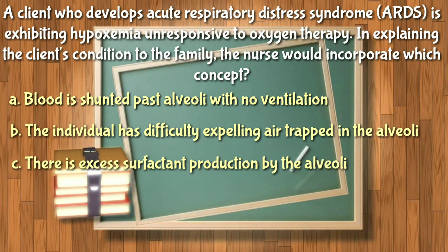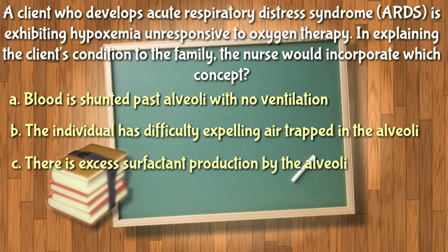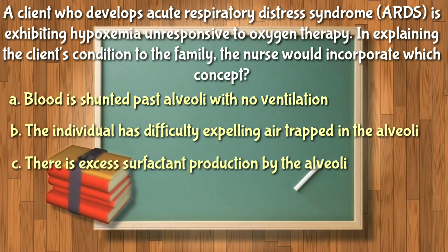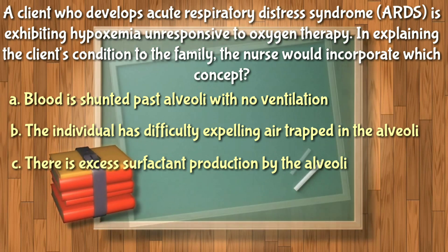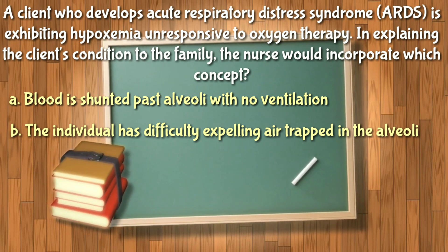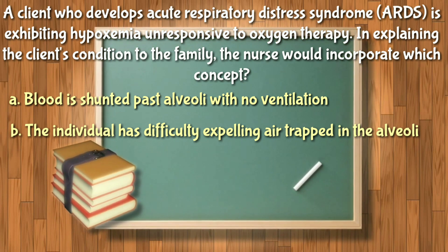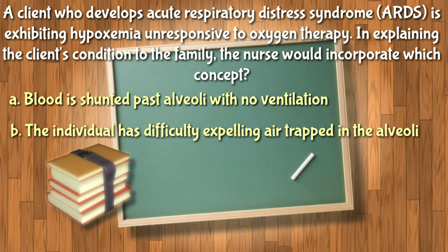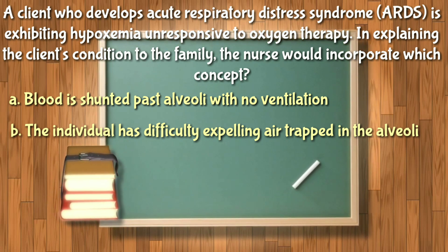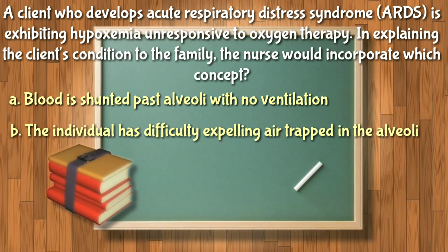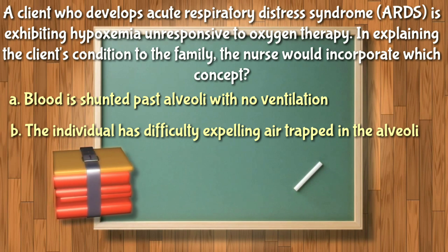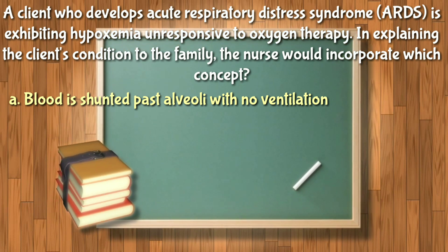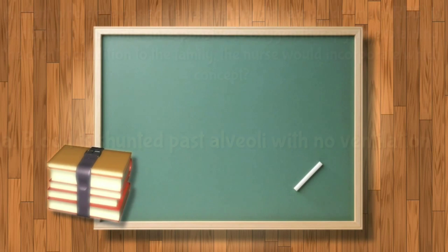Surfactant production decreases with ARDS, which impairs adequate gas exchange — so there is no excess surfactant, eliminating letter C. Air does not become trapped in hyperinflated alveoli in ARDS, eliminating letter B. The correct answer is letter A: the primary alteration in ARDS is collapse of alveoli with loss of ventilation in those areas.